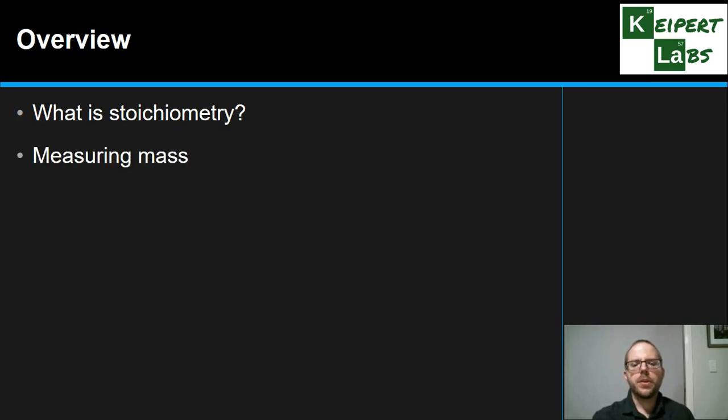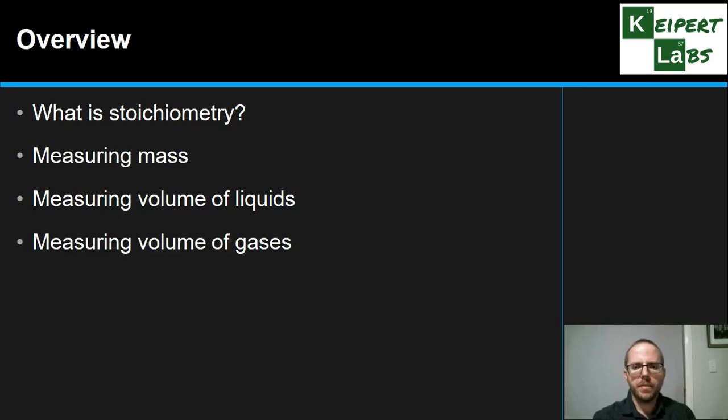And then we're going to look at some of the fundamental principles about measuring properties in chemistry. We just mentioned this idea that it's to do with quantitative chemistry, or the chemistry involving measurement. So we're going to look at how we measure mass, how we measure volume of liquids, and how we measure volume of gases.